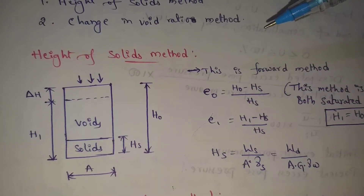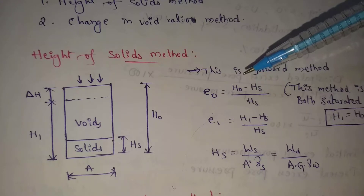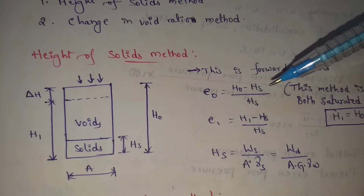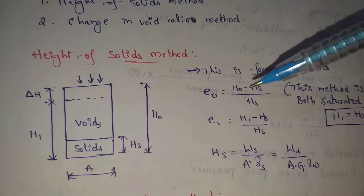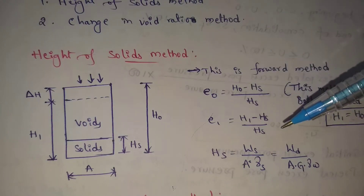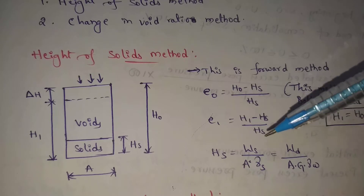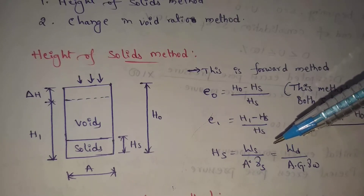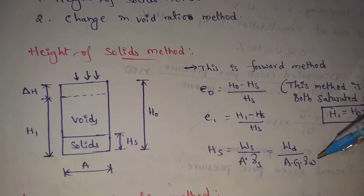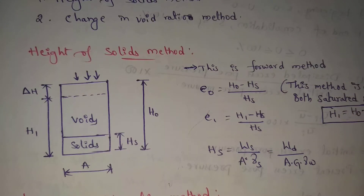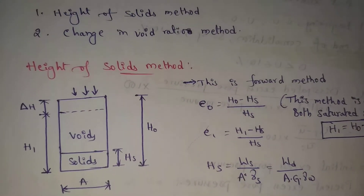Before load is applied, the void ratio is E0, where E0 = (h0 − hs) / hs. Next, some intensity of loading is applied, consolidation is done, and water content also changes. So E1 = (h1 − hs) / hs. The value of hs = Ws / (A × γs), where A is the area of the soil and γs is the unit weight of solids. This equals Wd / (A × G × γw), where G is the specific gravity of soil and γw is the unit weight of water. This height of solids method is applicable to both saturated and unsaturated soils.